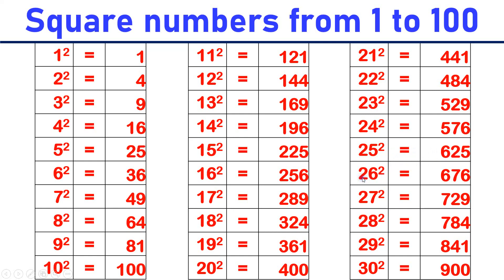26 square is equal to 676. 27 square is equal to 729. 28 square is equal to 784. 29 square is equal to 841. 30 square is equal to 900.